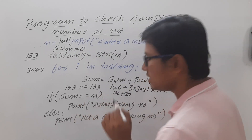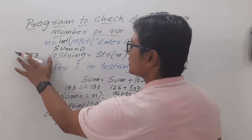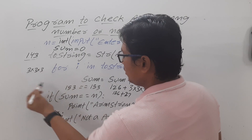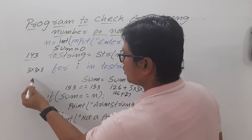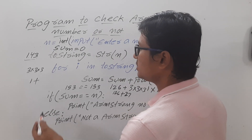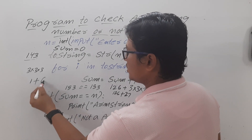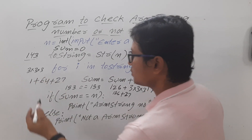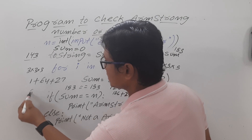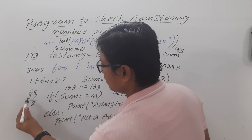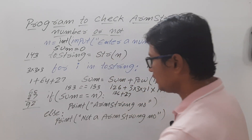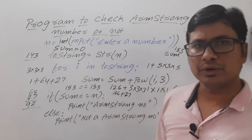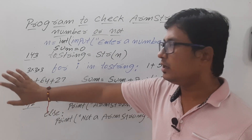Now sum is 153 and n is 153, so 153 == 153 is true and 'Armstrong number' is printed. Suppose the user entered 143: 1³ = 1, 4³ = 64, 3³ = 27, total = 92. Since 92 ≠ 143, it prints 'Not an Armstrong number'. This is one way to do it, but this is not the best approach.